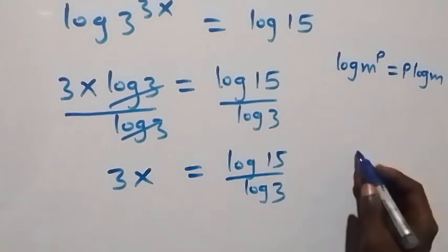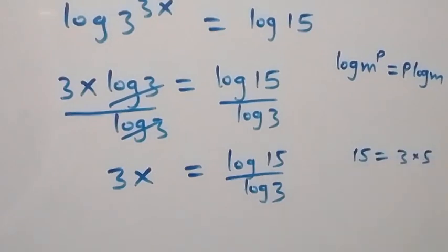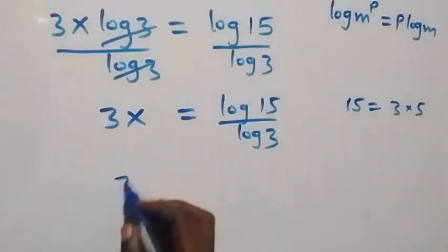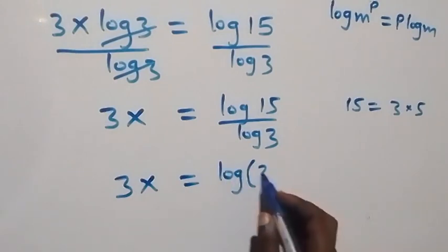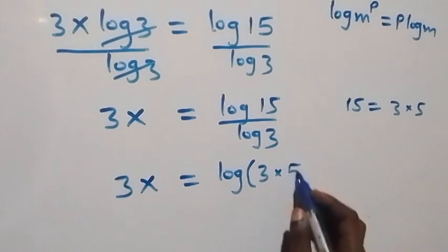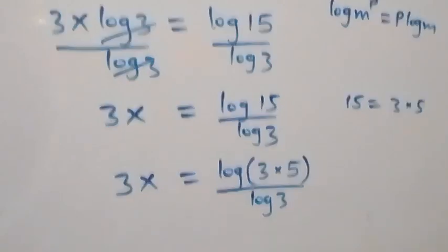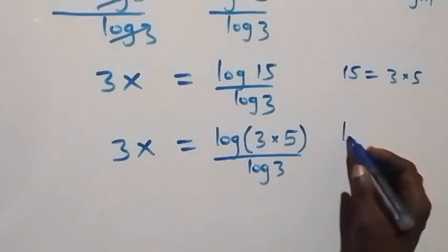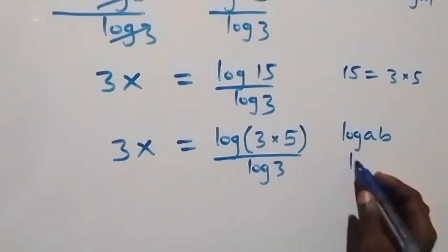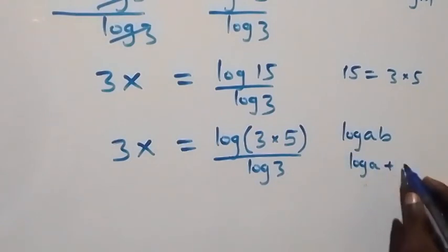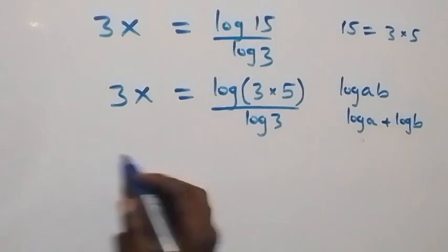From here we can write 15 as 3 times 5, which implies that 3x equals log of (3 times 5) over log 3. From the product rule of logarithms, log of a times b equals log a plus log b. Applying that here gives us 3x equals log 3 plus log 5, all over log 3.